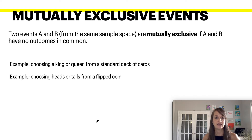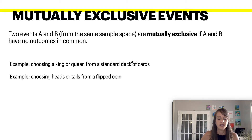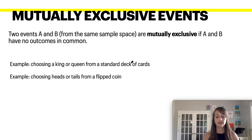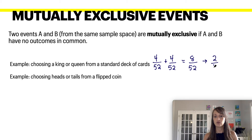A mutually exclusive event is when two events have nothing in common in their outcomes. For example, the probability of choosing a king or a queen from a standard deck of cards — there is no card that is both a king and a queen, so you don't have to worry about overlap. There are four kings and four queens, so the probability is 8 over 52, which reduces to 2 over 13.